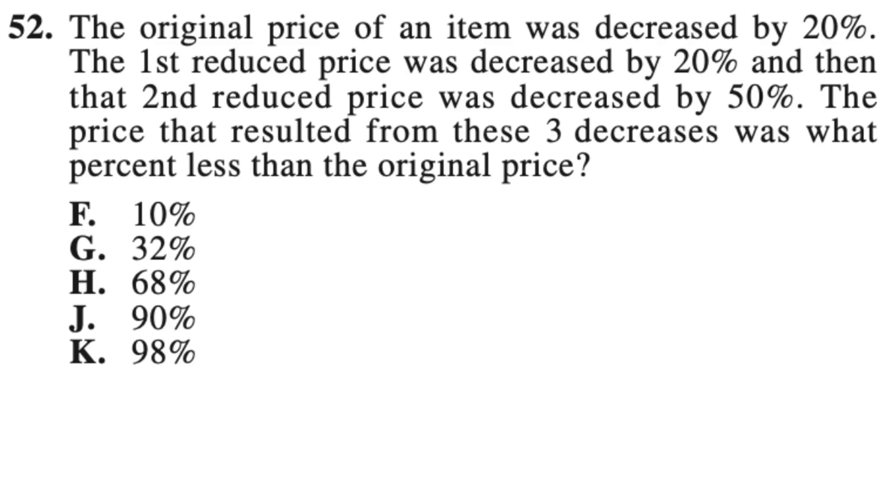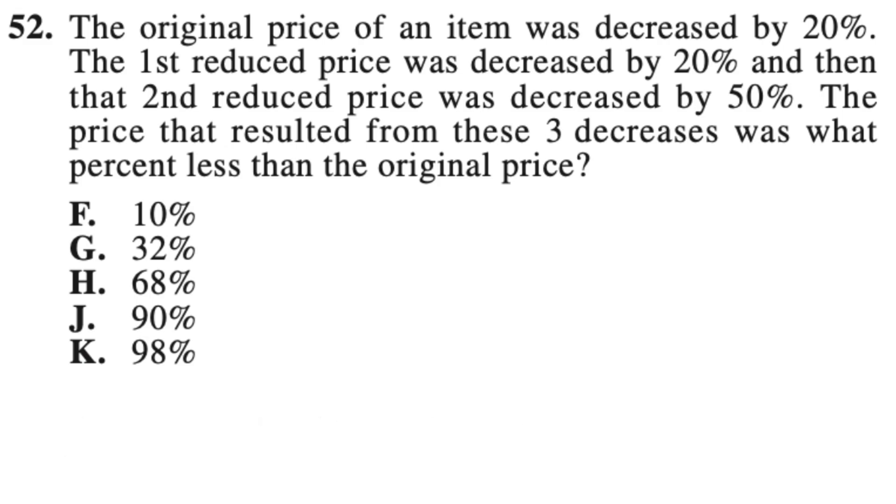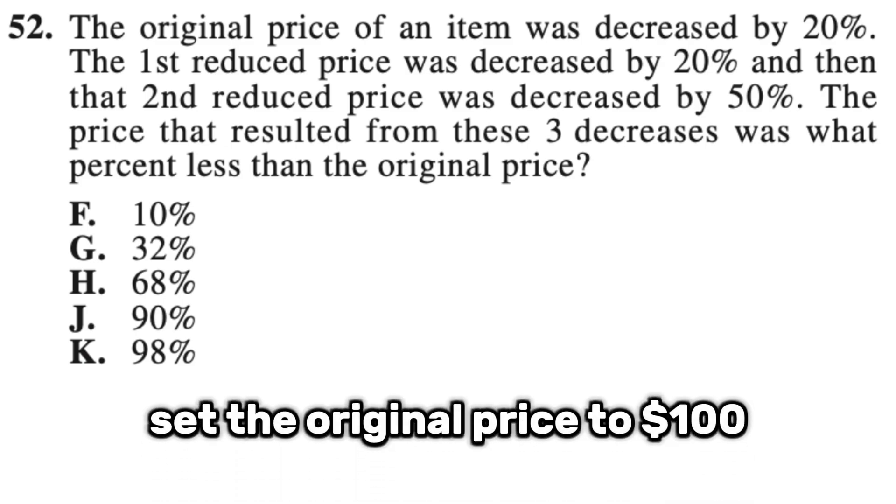A trick that the ACT likes to use is a misleading answer choice. They're aware of common mistakes that you may make, and they deliberately include them in the answer choices so you don't realize that you're wrong. You can prevent yourself from making these sorts of mistakes and falling into the ACT's traps by logically walking through these problems. And a really nice trick for this is we talked about this. It's just plugging in numbers for the variable. And the variable would be what the original price is, but we can just plug in 100 to make that easier.